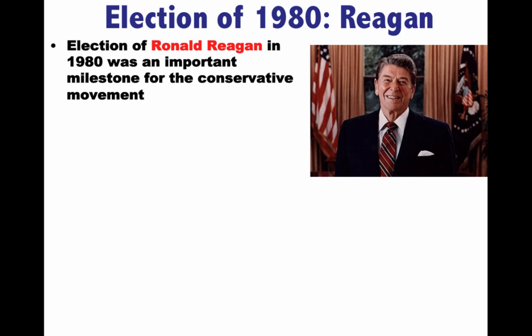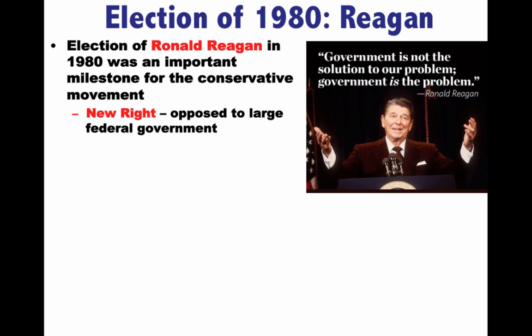Reagan beats Jimmy Carter, who was running for re-election. Reagan had been around for a while — he was involved in 1964 politics with Barry Goldwater, became governor of California, and was a former actor. He takes office in 1981. This is the new right. They're opposed to large federal governments and deficits. The famous quote: 'Government is not the solution to our problem — government is the problem.' This is a very different view of the role of government.